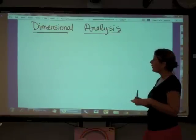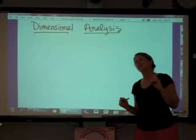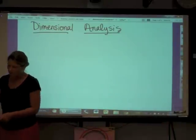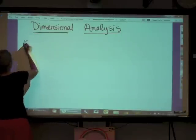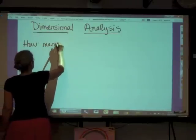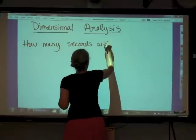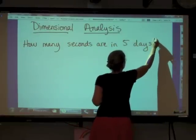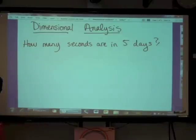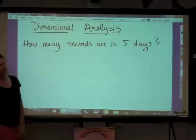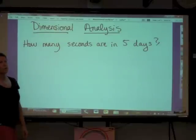We're going to look at a couple of examples that are very familiar to you so that you get this tool before we start using it in a chemistry context. The first thing we're going to do here is look at how many seconds are in five days. Now some of you could work this out in your head, but that's not how I want us to do this right now. We're learning a method, that method is dimensional analysis, and we are going to let the units guide us.